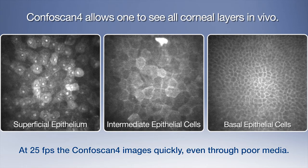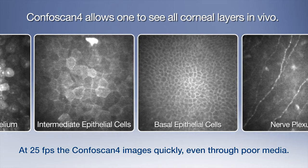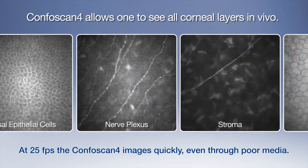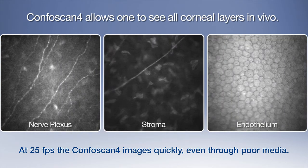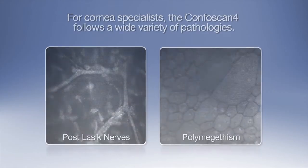that includes the superficial epithelium, intermediate epithelial cells, basal epithelial cells, nerve plexus, stroma, and endothelium.